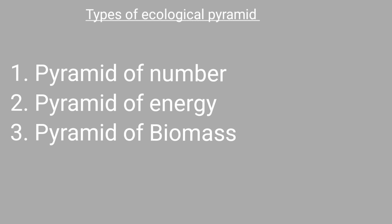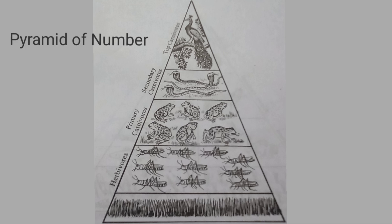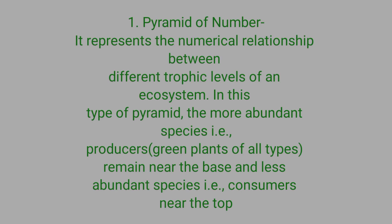The types of ecological pyramids are: number one, pyramid of number; number two, pyramid of energy; number three, pyramid of biomass. The pyramid of number represents the numerical relationship between different trophic levels of an ecosystem. In this type of pyramid, the more abundant species, that is producers — organisms like plants — remain near the base, and less abundant species, that is consumers, remain near the top.